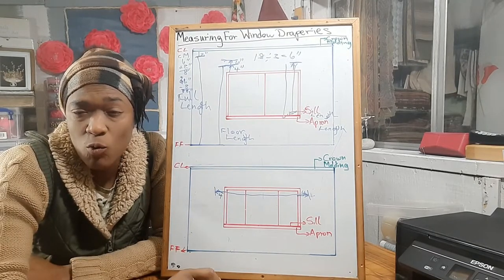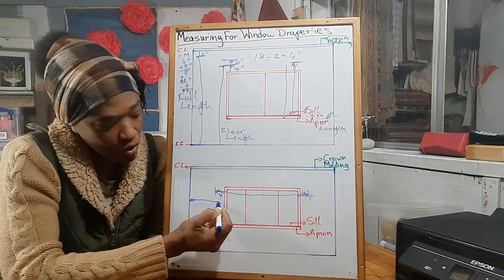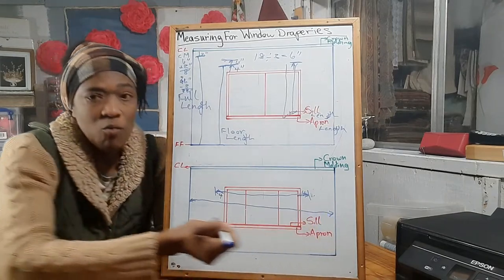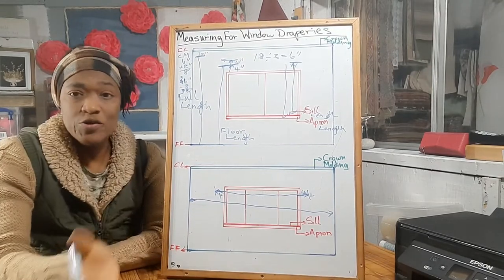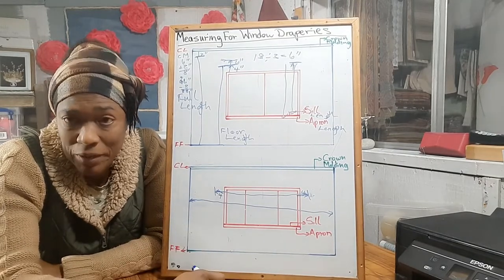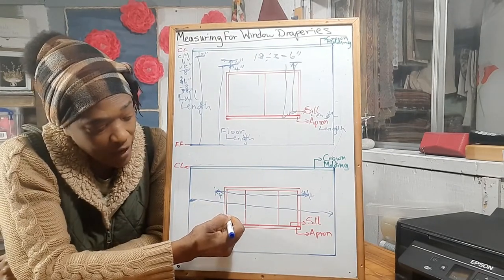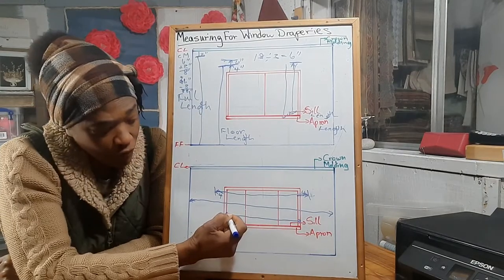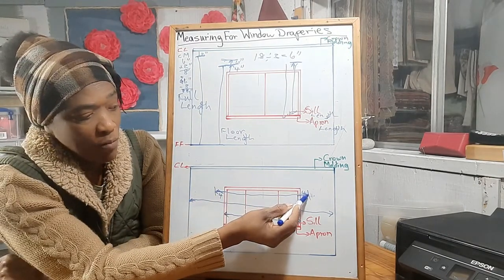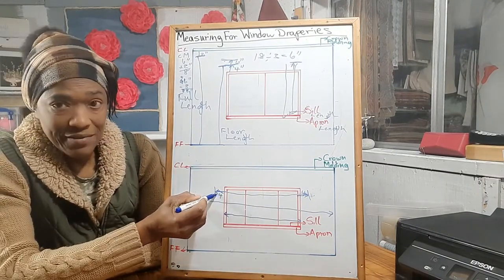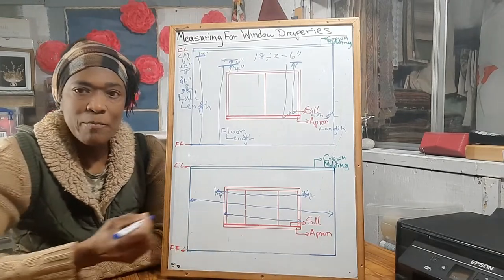If you want the width of your drapery to cover from wall to wall or corner to corner, then you measure right across from one corner to the next. So you can have on-the-frame measurement, off-the-frame measurement four inches on either side, or wall-to-wall drapery where you measure right across.